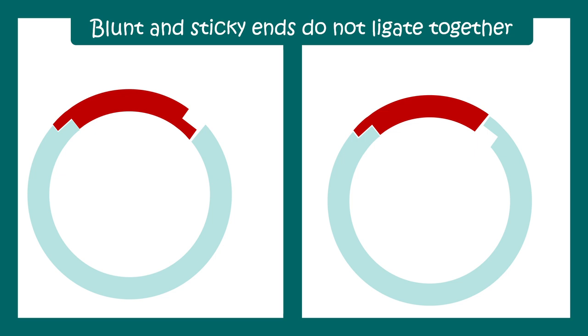On the other hand, we can see the vector has sticky ends but on one side of the insert there is a blunt end. Blunt ends don't really ligate well with sticky ends. In this case, we need another element known as linkers or adapters.